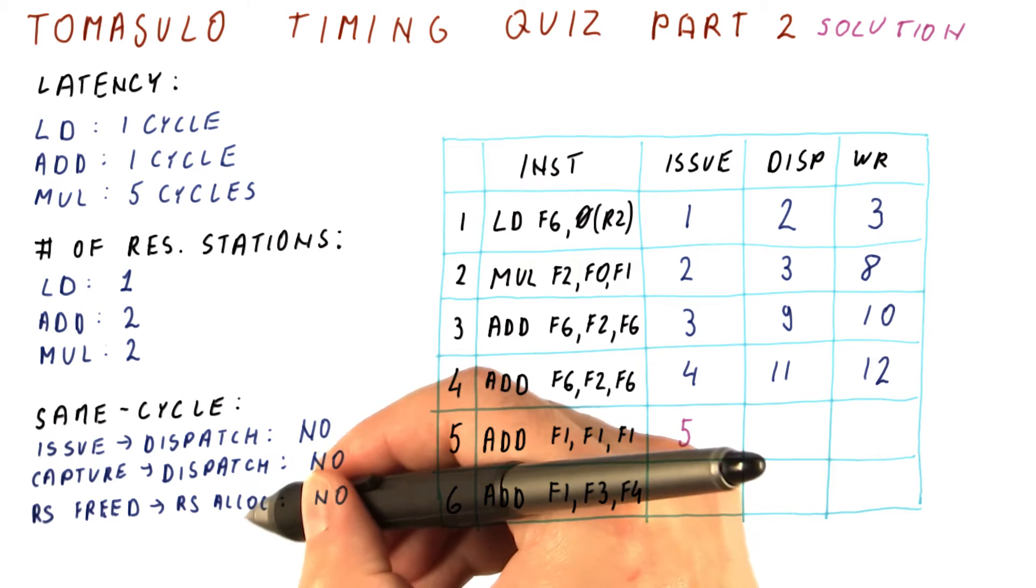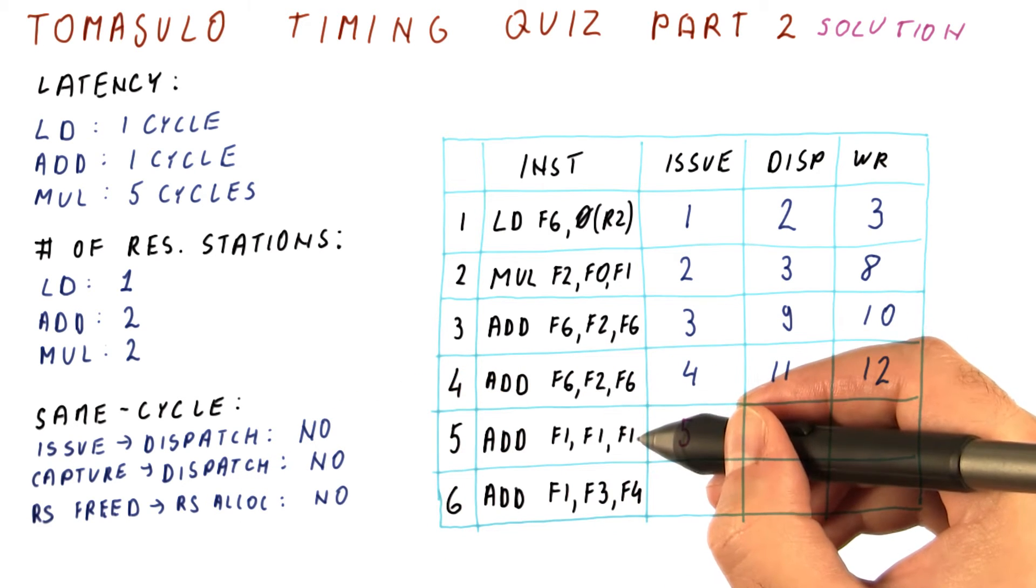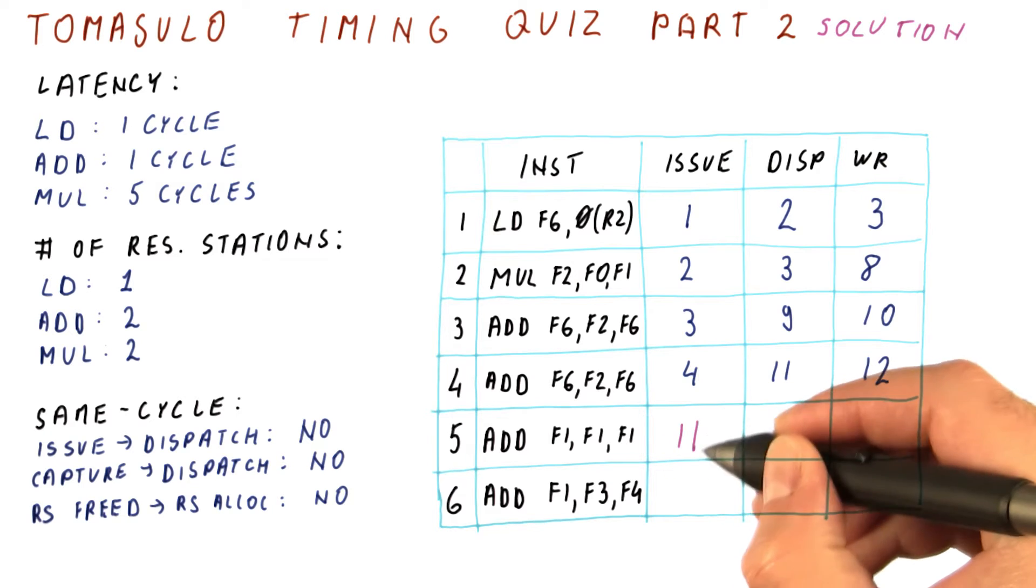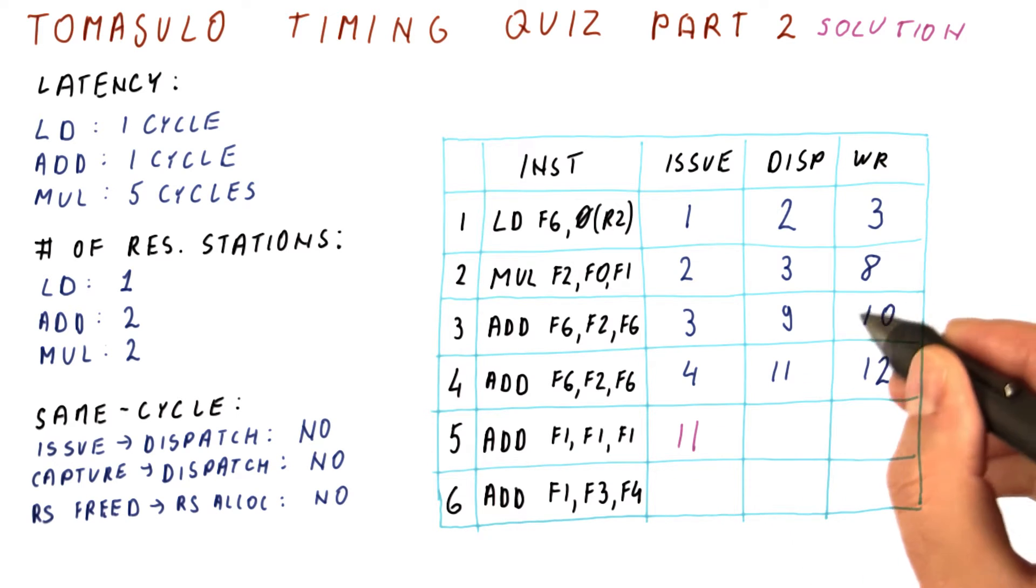It cannot be allocated to this ADD immediately, so this ADD can only issue in cycle eleven because it needs this reservation station.